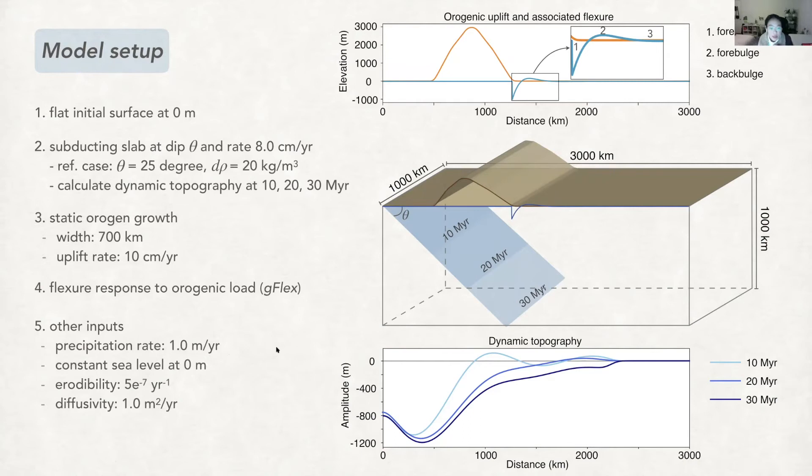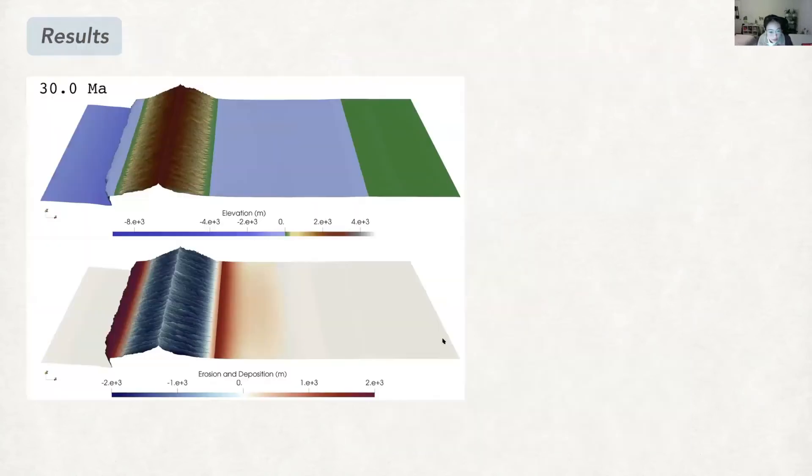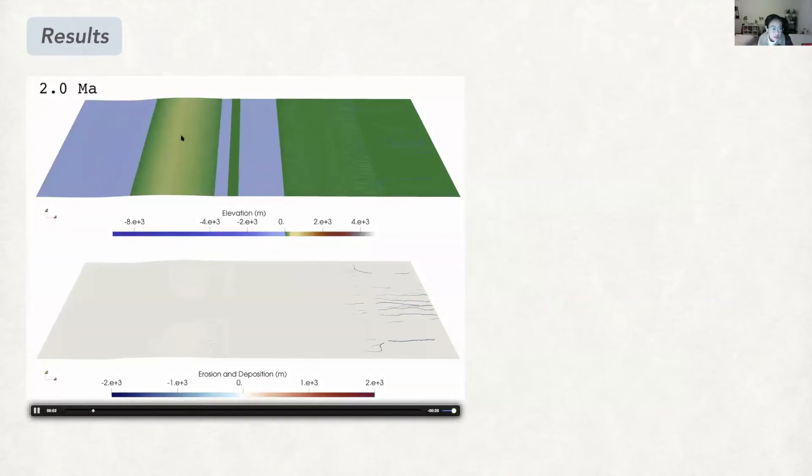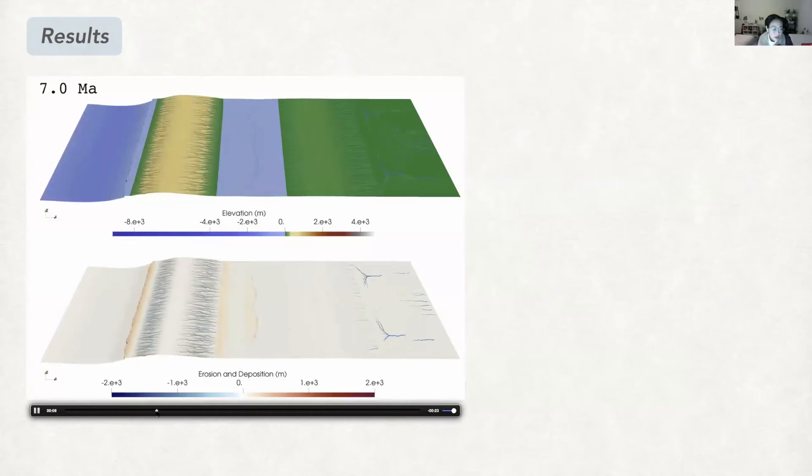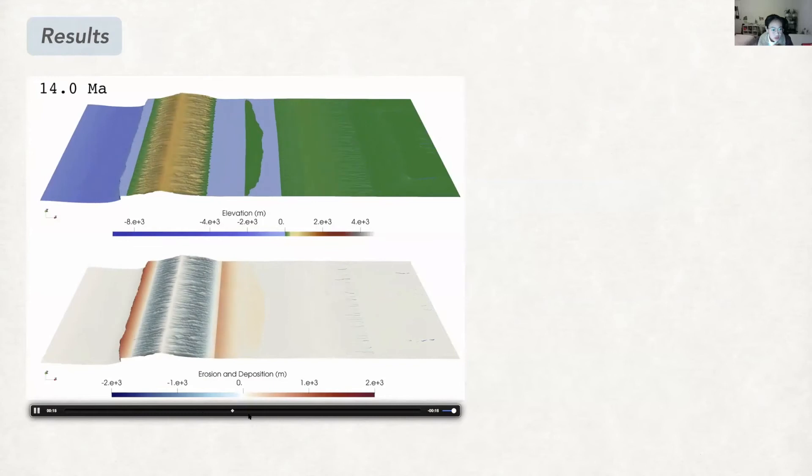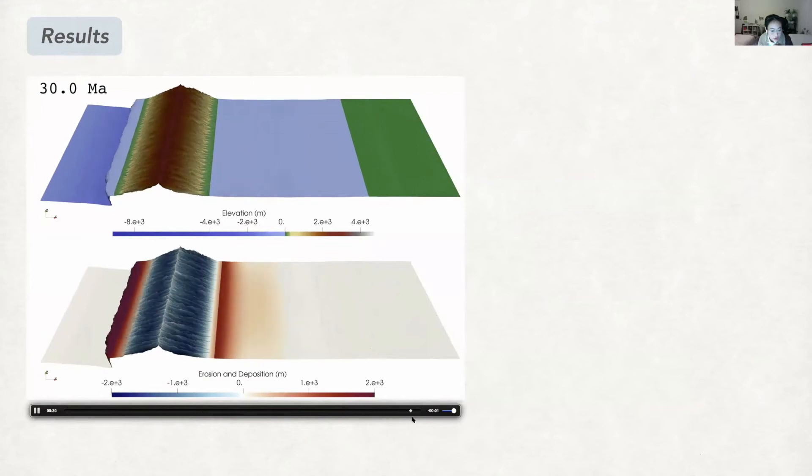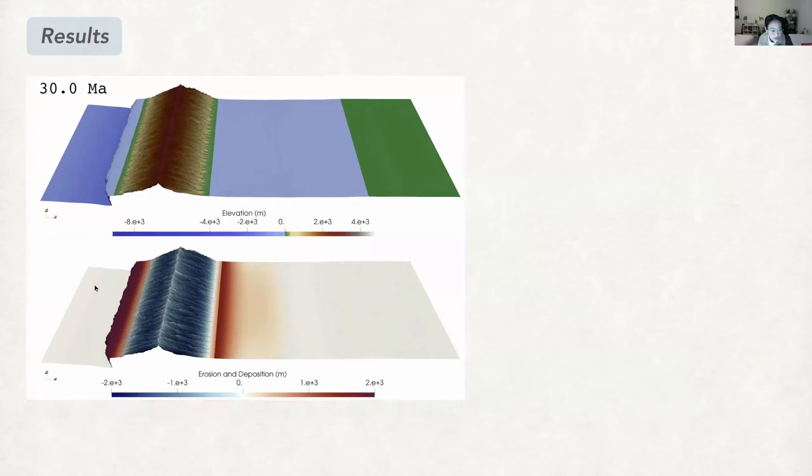So we run the model in Badlands. Let's have a look at the result. Here this animation shows the topography change at the top and also erosion and sedimentation at the bottom. Basically it shows the uplift of a mountain belt and also the erosion of the mountain belt and also the sedimentation on the trench side and also on the foreland side.